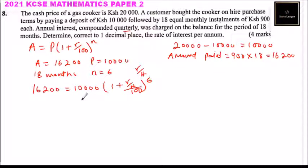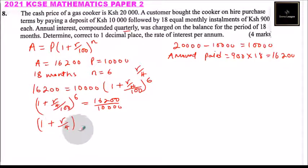When you take 10,000 to the other side, you get (1 + r/400)^6 equals 16,200 divided by 10,000, which is 1.62. Instead of r over four, you can use 0.25r over 100, that's the same.